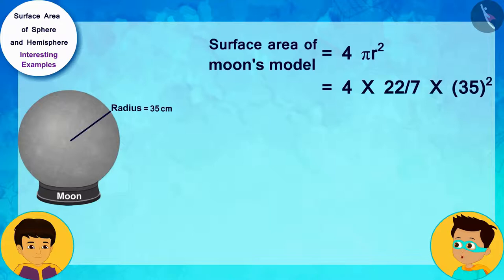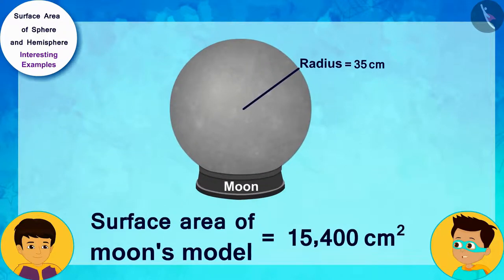Manas, the surface area of the model of the moon is 15,400 square centimeters.